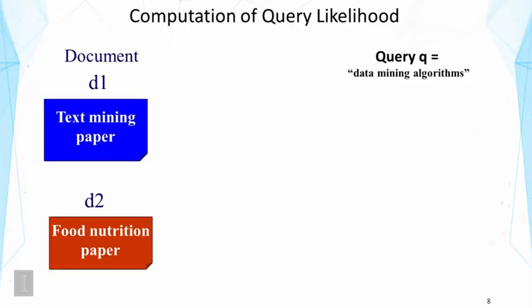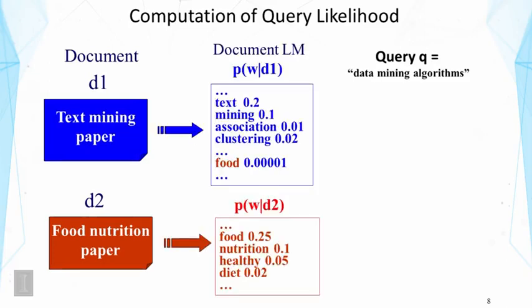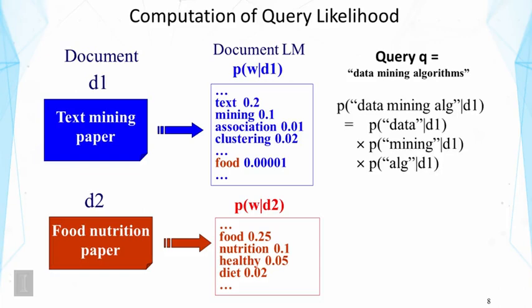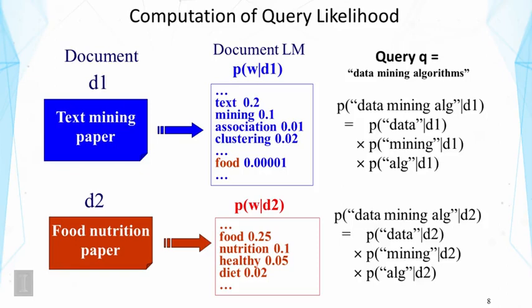Computing this query likelihood under the new assumption involves two steps. First, estimate the document language model — for example, two possible language models estimated based on two documents. Second, given a query like 'data mining algorithms,' compute the likelihood of this query as a product of the probability of each query word under the independence assumption. We do this for both documents, score them, and rank them. That's the basic idea of the query likelihood retrieval function.